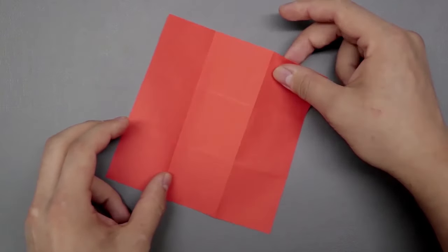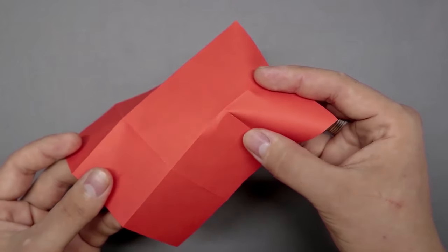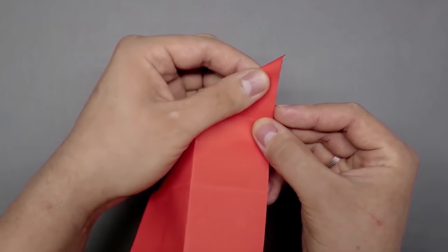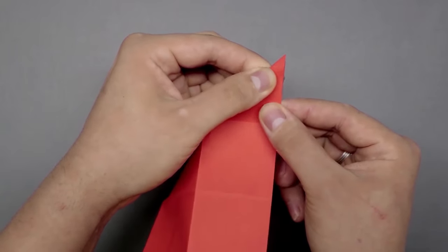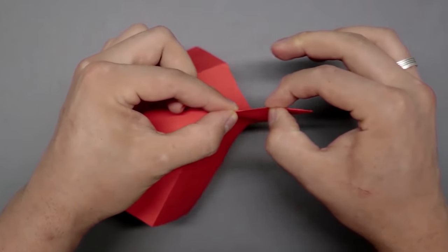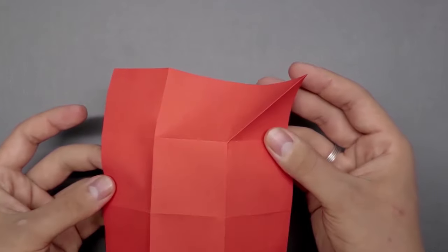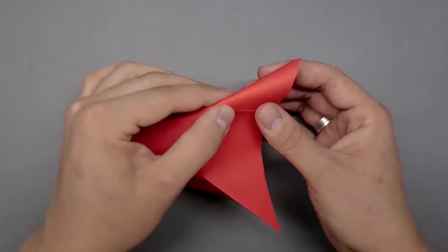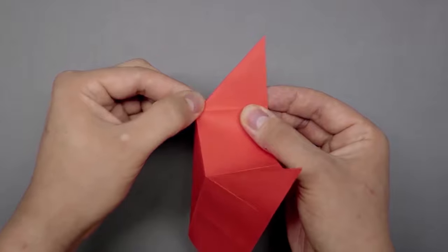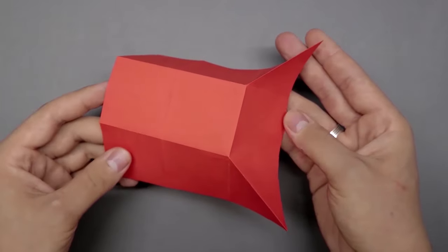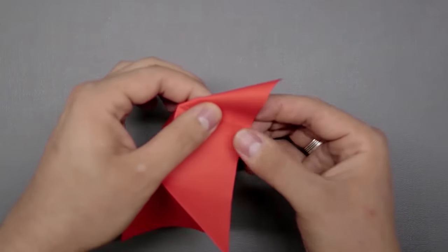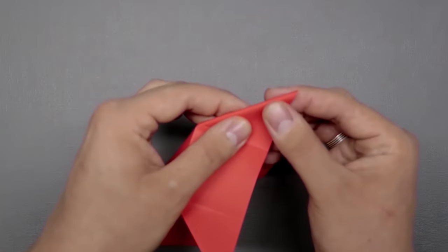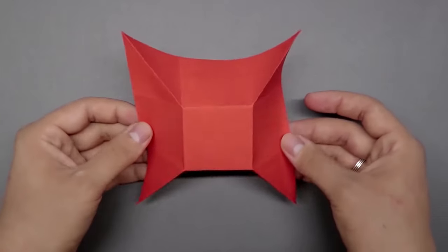So, to do that, we gotta close the square down, bringing the corners together, and then we flatten the paper by connecting the other two corners. Something like this. Let's repeat on the other 3. Just fold in half diagonally, bringing the middle up. That's the result.